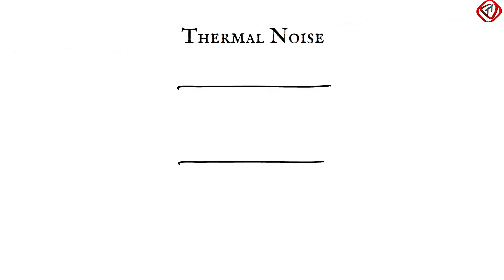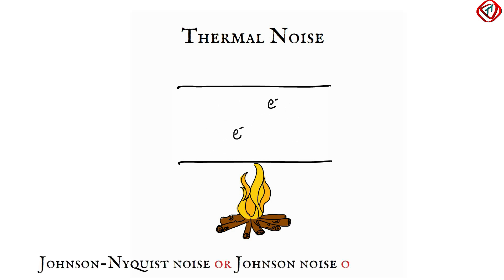Thermal noise is generated due to the random motion of electrons in a wire. Thermal noise is always present in electrical equipment and is directly proportional to the temperature of the wires. It is also known as Johnson-Nyquist noise, Johnson noise, or Nyquist noise. Elimination of thermal noise is not possible in reality. However, reducing the temperature in electrical circuits can reduce the thermal noise.